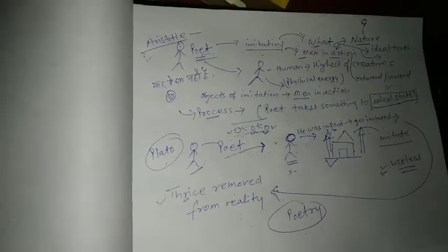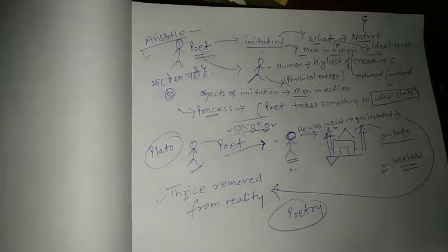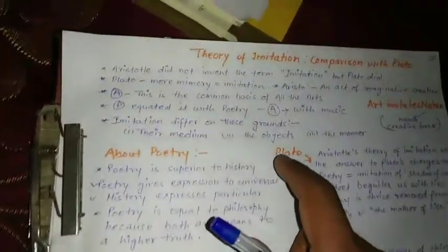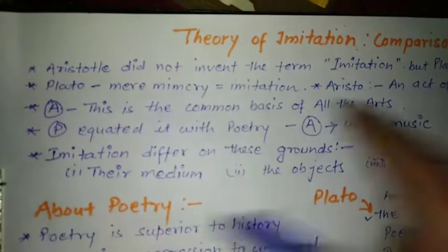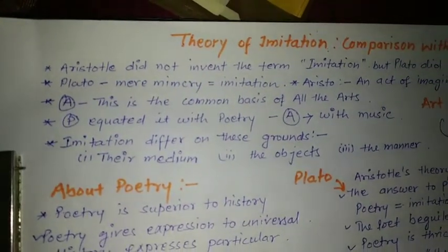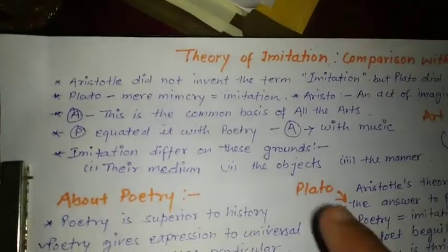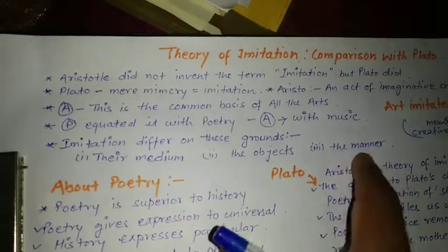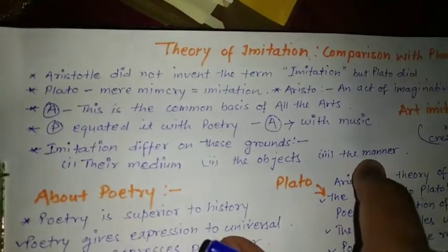In three ways, you can see in my notes that he says that there are three imitation differs on these grounds: their medium, their objects, and the manner. And in this way he calls that poetry is different.